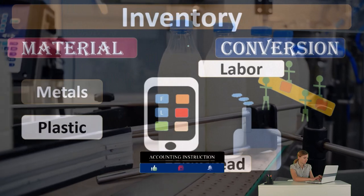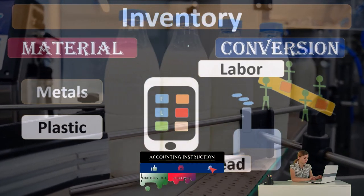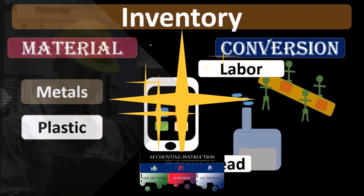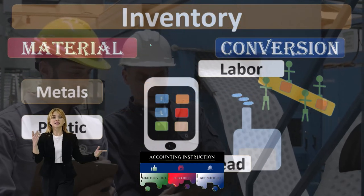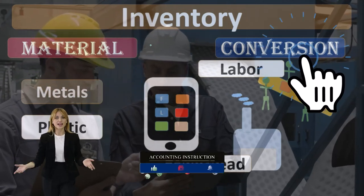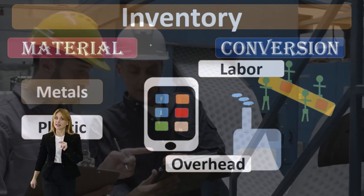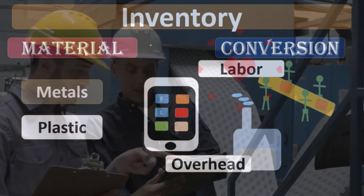So the groupings for inventory in manufacturing, in any inventory somewhere along the production process, will be materials, the raw things in there. And then a large component of that inventory includes the conversion costs, the things needed to make those materials into something we actually want. And that's going to be the labor, that's going to be the overhead.